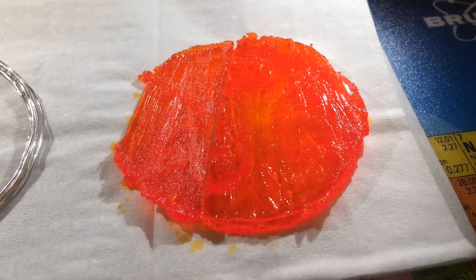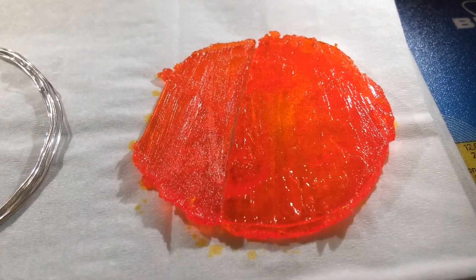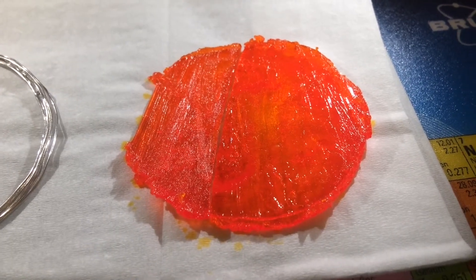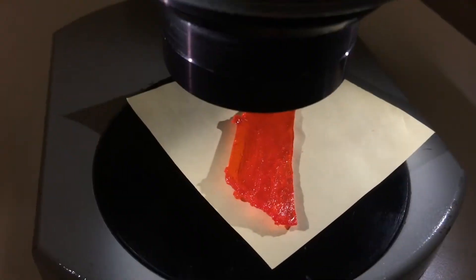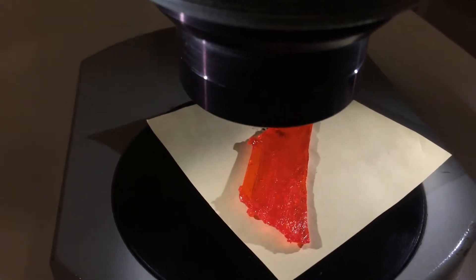But before it dissolves completely, we're just gonna put it under the microscope, see what it looks like, and then place it back on the vacuum. So there we go, we put half of the crystal under the microscope and we've got to be quick now.